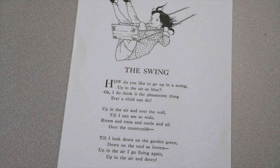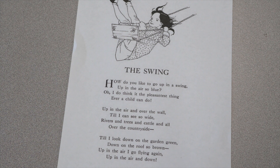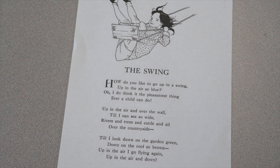How do you like to go up in a swing? Up in the air so blue. Oh, I do think it is the pleasantest thing ever a child can do. Up in the air and over the wall till I can see so wide. Rivers and trees and cattle and all over the countryside. Till I look down on the garden green, down on the roof so brown. Up in the air I go flying again. Up in the air and down. Hopefully you noticed that I was reading that poem to a beat, and the rhythm sounded good. Did that beat sound happy or sad to you?